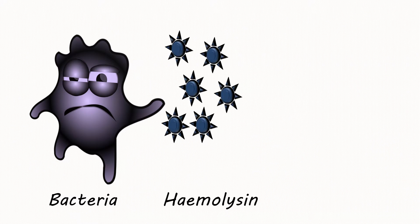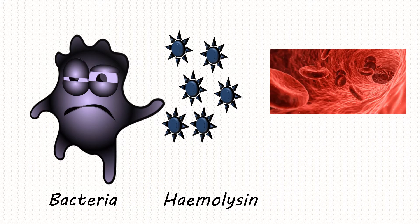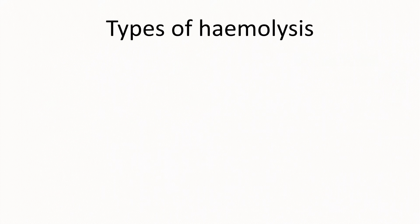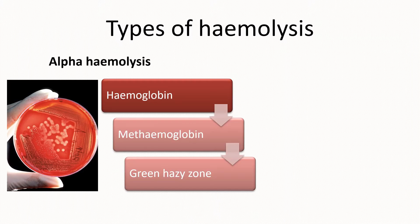Some bacteria have the ability to synthesize hemolysin, which can actually lyse blood cells. This hemolytic reaction can be visualized on a blood agar plate. There are different types of hemolytic reactions that can be visualized.